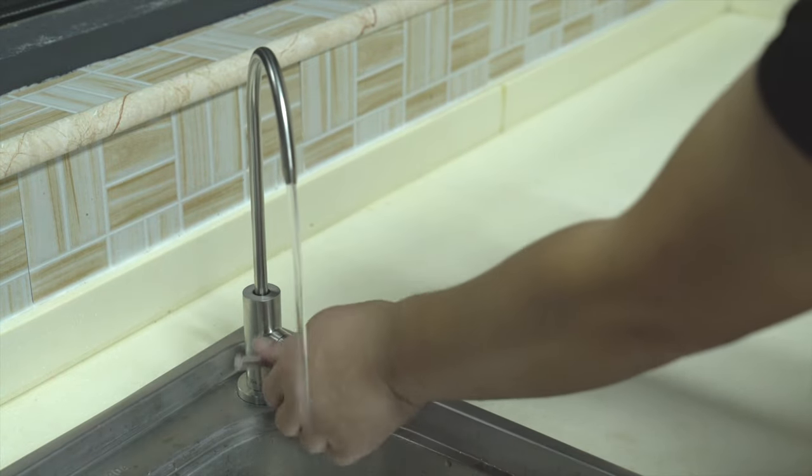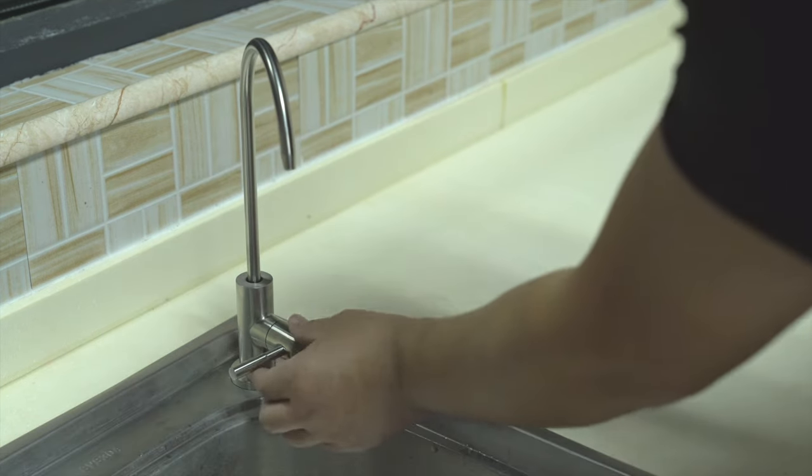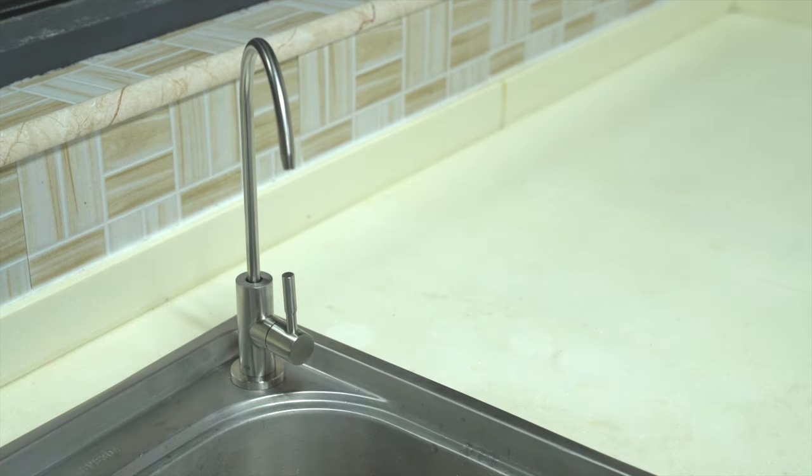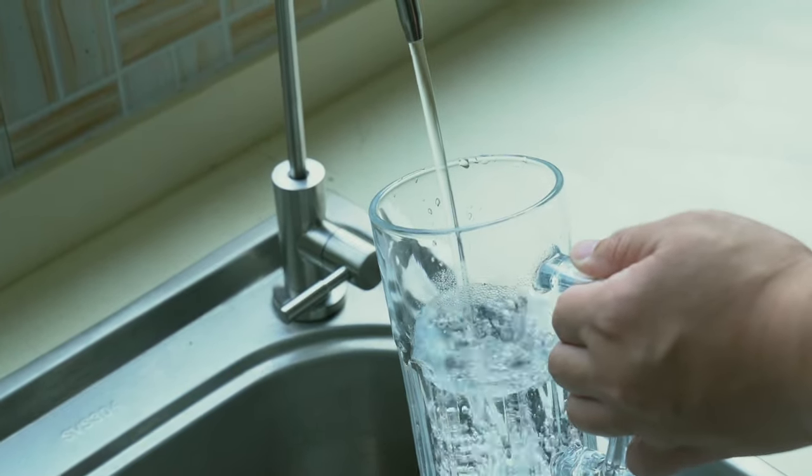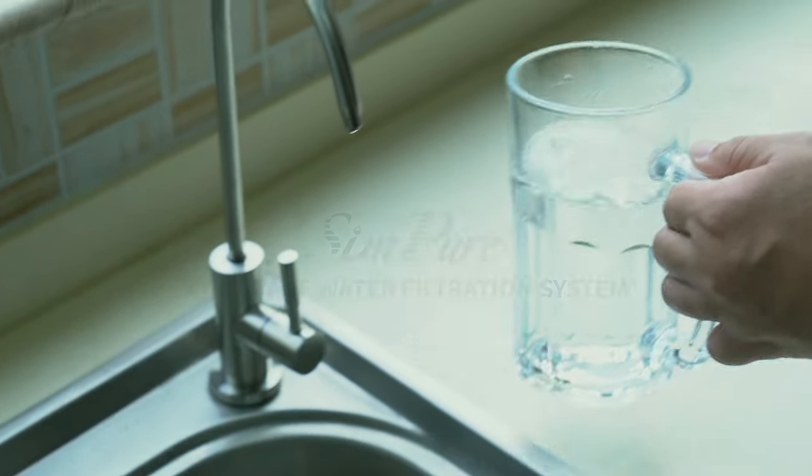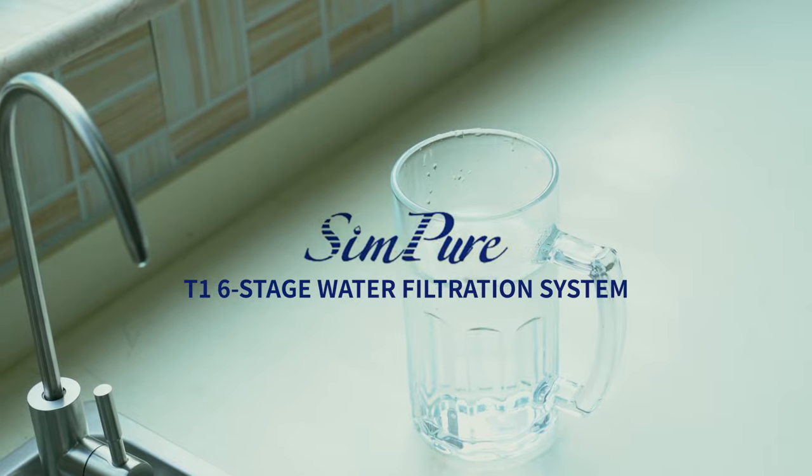Nine, after two hours, open the sink faucet and allow the pressure tank to drain once again. After a few minutes, the water from the faucet will get noticeably less. Close the sink faucet and allow the pressure tank to refill for at least one hour. The water purifier has now been rinsed and is safe for use. Enjoy the fresh, clean taste of healthy, purified water from Simpure T1's six-stage water filtration system.